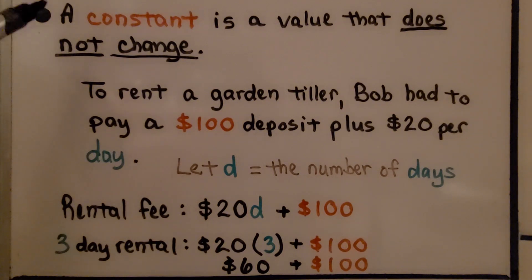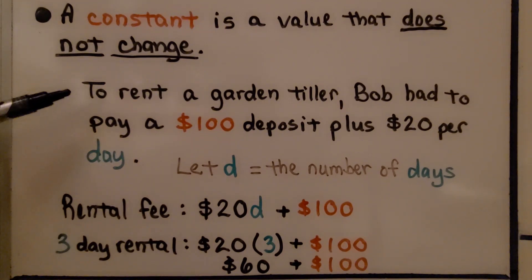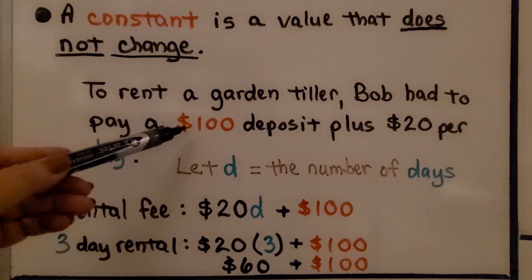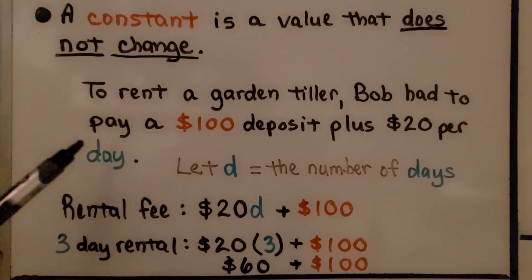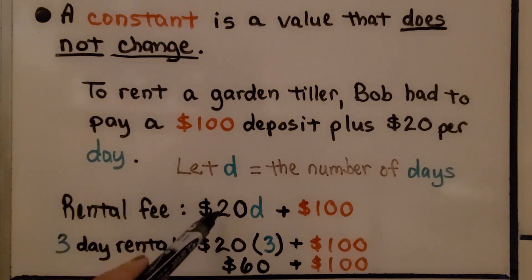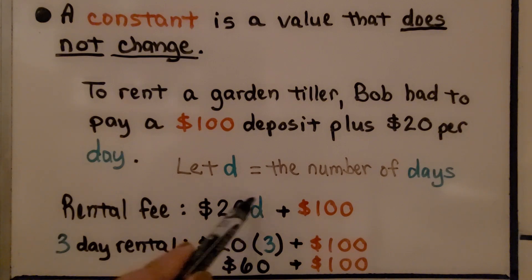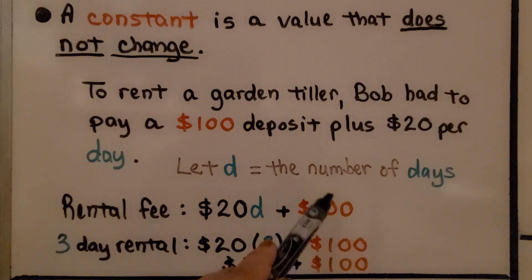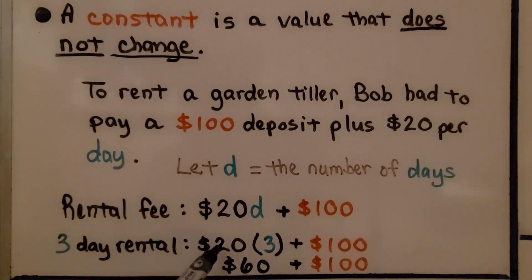A constant is a value that does not change. To rent a garden tiller, Bob had to pay a $100 deposit plus $20 per day. We let D equal the number of days, so the rental fee is $20 times D plus the $100 deposit. A 3-day rental would be $20 times 3, which is $60, plus the $100. That $100 is the constant — it's a value that does not change.